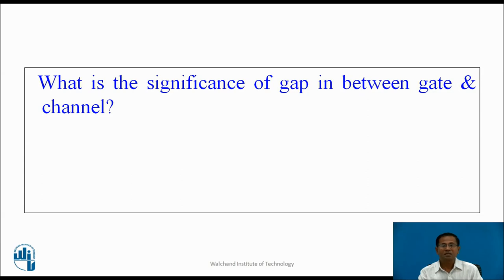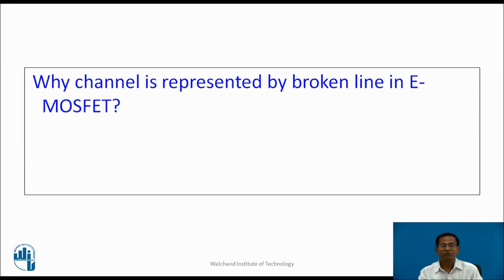The gap between the gate and channel signifies that in this MOSFET, the gate is isolated from the channel. In between the gate and channel, there is a dielectric medium — a thin layer of oxide (SiO2) is present. That is why the input impedance of the MOSFET is very high. In the depletion MOSFET the channel is present physically, but in the E-MOSFET the channel is present virtually, which is why the channel is represented by a broken line.